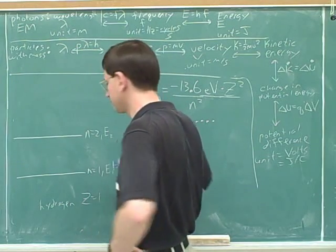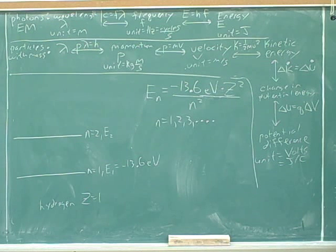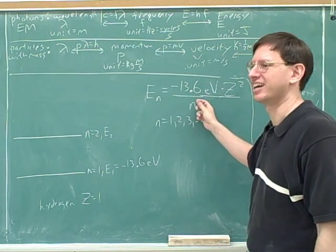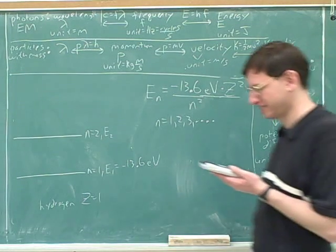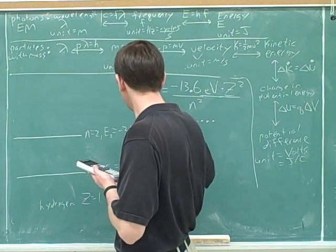Let's figure out what E would be. So it's divided. Right. So negative 6.8. Did you remember the square? No. Okay. Negative 3.4 electron volts.